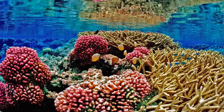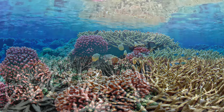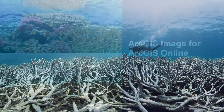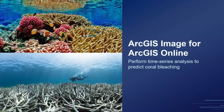Coral reefs are home to 25% of marine species, making them one of the most important ecosystems on the planet. Unfortunately, reefs worldwide face many risks, including global climate change. Warmer ocean temperatures cause coral bleaching. I'll dive into a scenario where we use ArcGIS Image for ArcGIS Online to perform predictive analysis and identify regions in the coral triangle that are susceptible to bleaching.